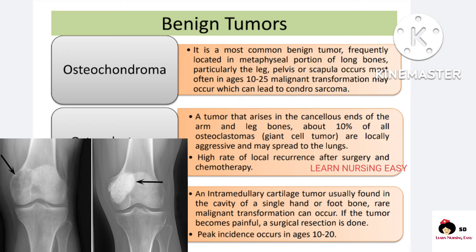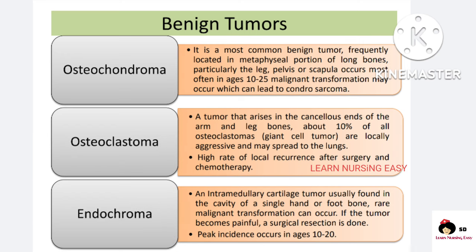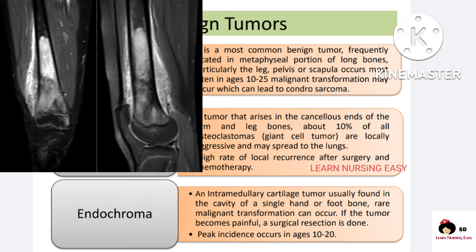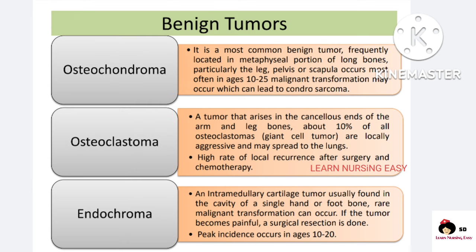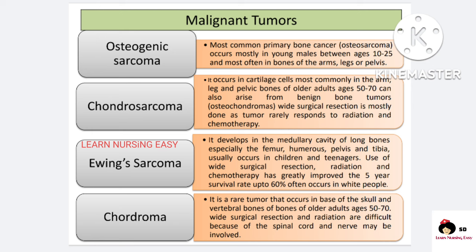Osteoclastoma is very aggressive and can spread to the lungs; even after surgery and chemotherapy there is a high rate of recurrence. Enchondroma occurs in the intramedullary canal — that is the inner layer — most commonly in the hand and feet. This cancer can also lead to malignant transformation and is most commonly seen in ages 10 to 20 years.